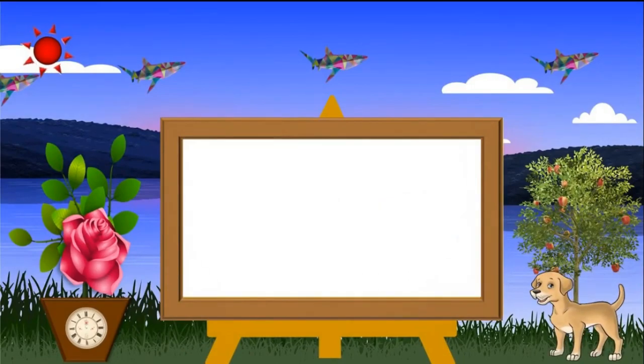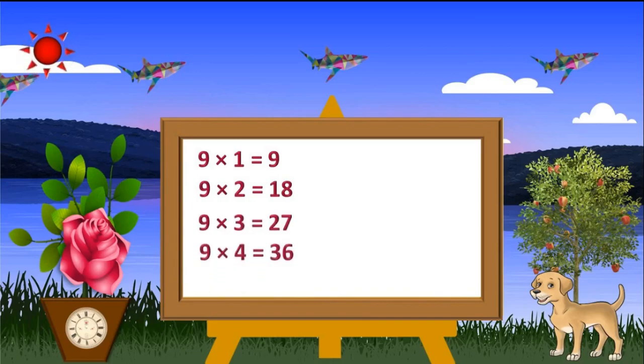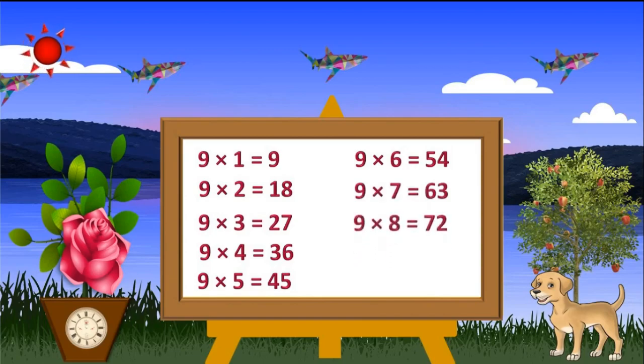Learn 9 tables. 9 times 1 equals 9. 9 times 2 equals 18. 9 times 3 equals 27. 9 times 4 equals 36. 9 times 5 equals 45. 9 times 6 equals 54. 9 times 7 equals 63. 9 times 8 equals 72. 9 times 9 equals 81. 9 times 10 equals 90.